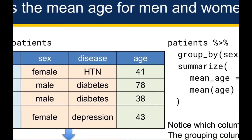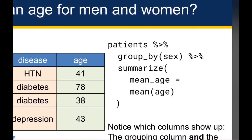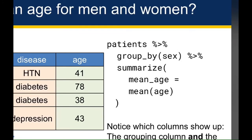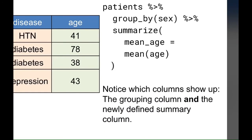To generate that data frame, I would group by sex and then use the same summarize function as before. This reads as: patients, then group by sex, then summarize mean age equals mean of age. Notice the columns that show up: the grouping column, which is sex, and the newly defined mean_age summary column.